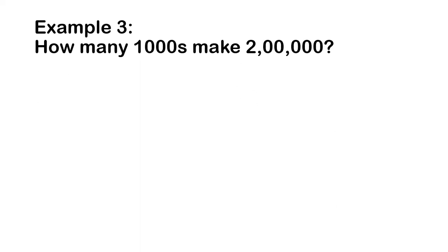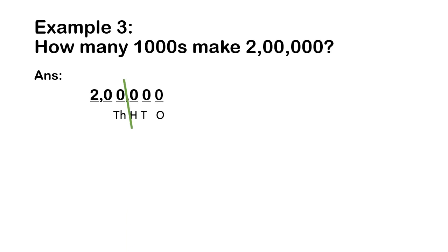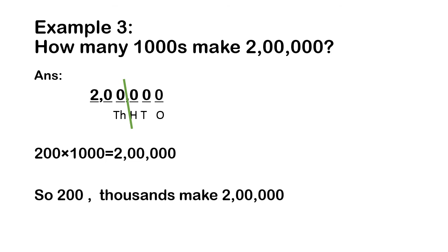The next sum: how many thousands make 2 lakhs? The first step is to write the place value up to thousands: ones, tens, hundreds, thousand. Then, from the thousands place, draw a line to separate. In the thousands place, the number here is 200. So 200 into thousand gives 2 lakhs. Therefore, 200 thousands make 2 lakhs.